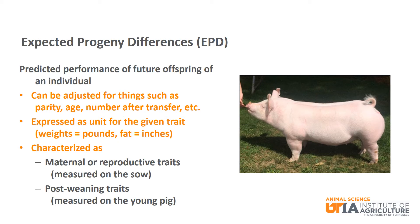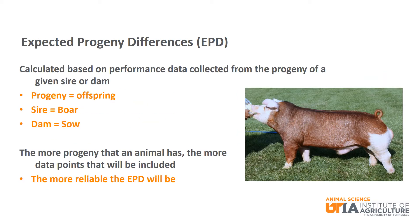EPDs are generally classified as maternal reproductive traits or post-weaning traits. They are expressed as the unit for each particular trait — for example, pounds for weights and inches for fat thickness. EPDs are calculated based on data collected from progeny of a given animal. Progeny refers to the offspring of an animal; the sire is the boar and the dam is the sow. As you would expect, the more progeny an animal has, the more data points included in their EPDs, resulting in more confidence or reliability in those values.